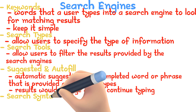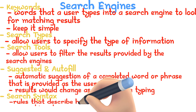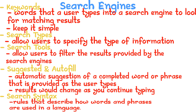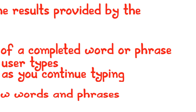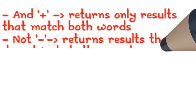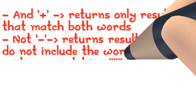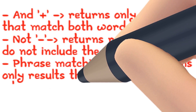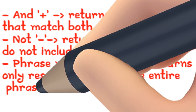Search syntax: syntax are the rules that describe how words and phrases are used in a language. Here are some syntax that you would use when entering something in a search engine. AND — returns only results that match both words. NOT — returns results that do not include the word. Phrase matching — returns only results that have the exact entire phrase.